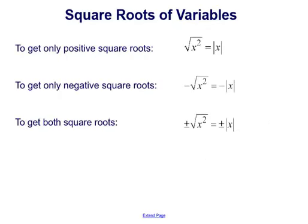We have to take advantage of the sign or symbol outside of the radical symbol. To only get positive square roots, the square root of x squared equals the absolute value of x. To get only negative square roots, we put the negative symbol out front: the negative square root of x squared is equal to the negative absolute value of x. And to get both square roots, we put plus or minus out front: plus or minus the square root of x squared equals plus or minus the absolute value of x. Those symbols are really important if you want to differentiate between the positive, negative, and both square roots.